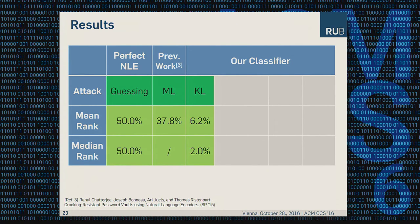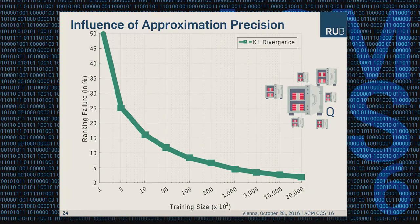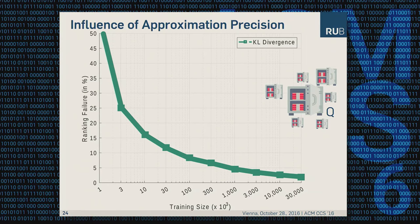Regarding other results: first, the more samples we have, the better. The x-axis shows training size from 1,000 to 30 million; the y-axis shows ranking failure — and lower is better for an attacker. The more samples we have, the more precisely we can approximate NoCrack's distribution, improving our attack. Of course, this requires more resources in terms of memory and storage.